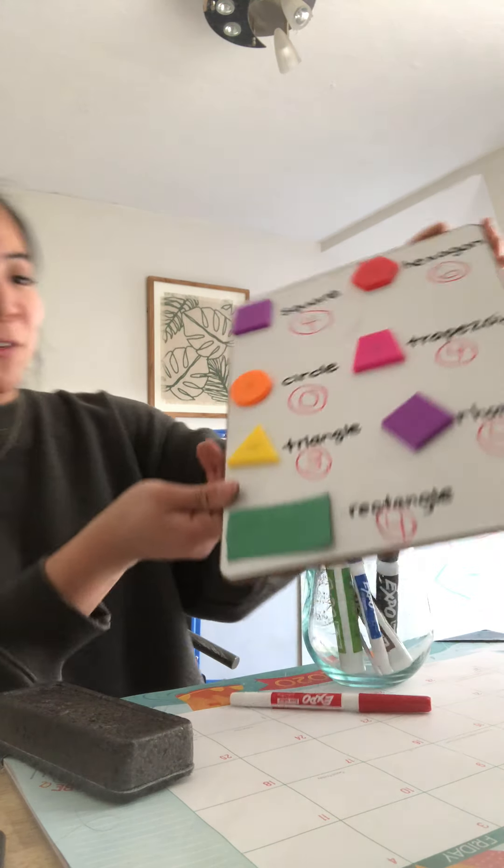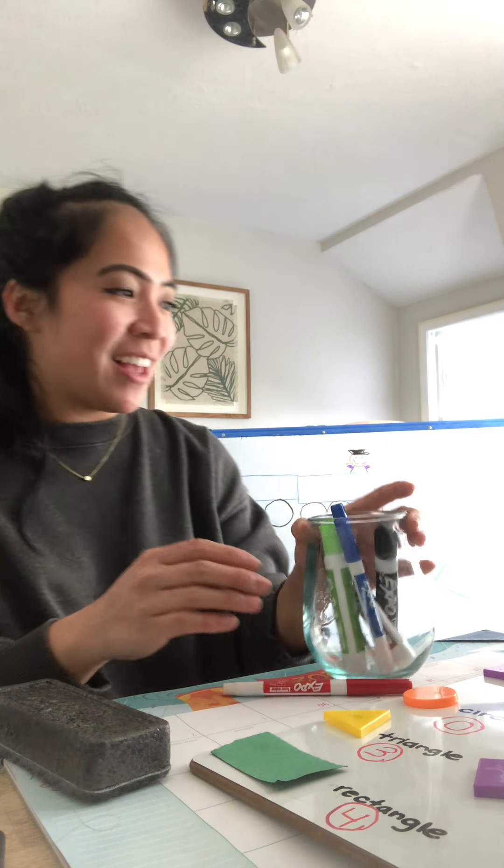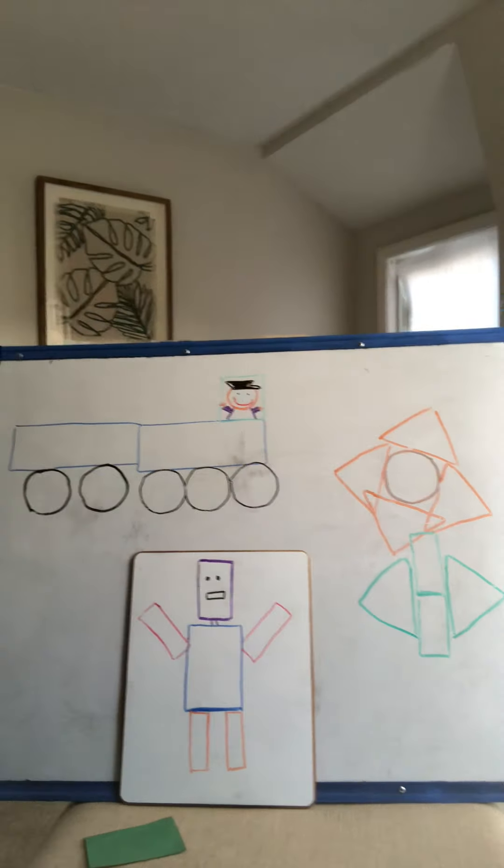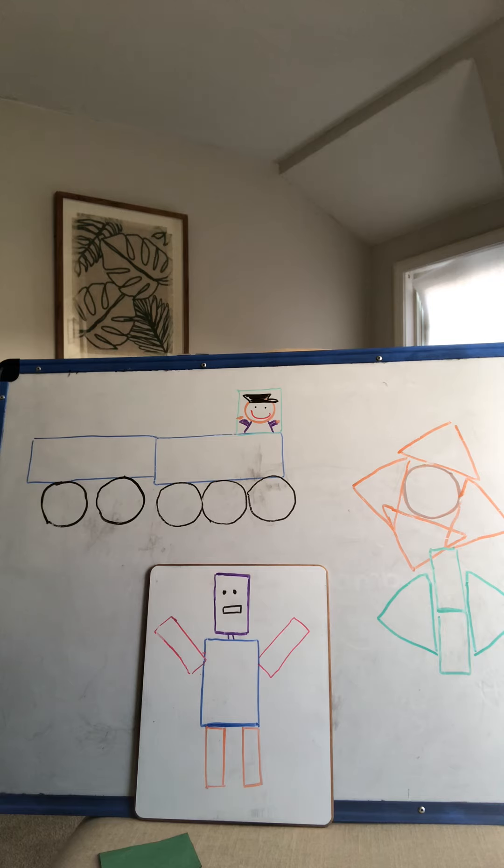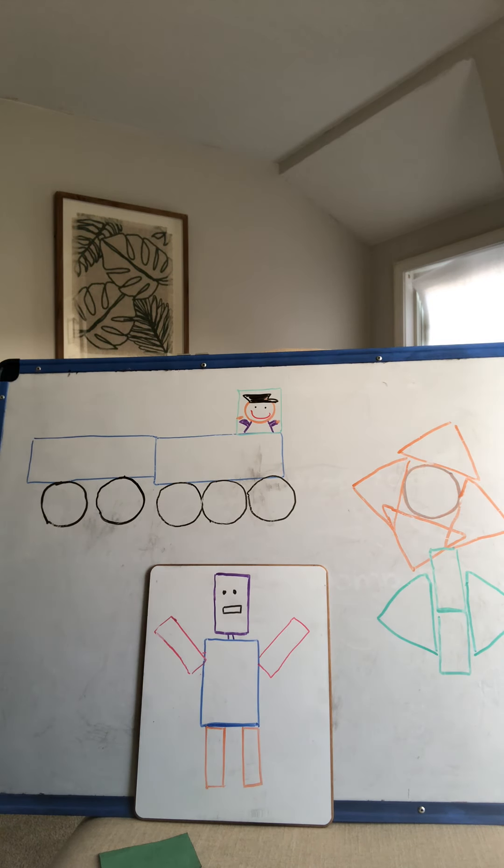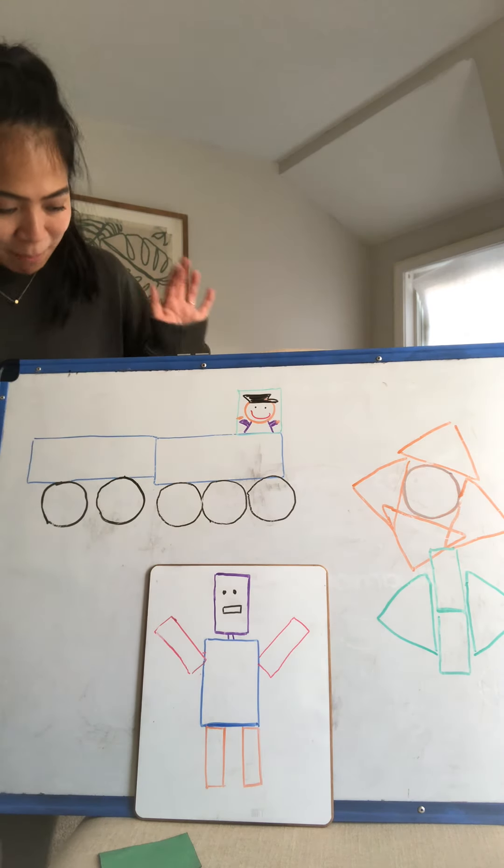Also, I would like for you guys to do is to make shape pictures using your shapes. And on the board, I have some shapes for you guys already. And I drew some up for you. As you can see, what is this? A train. That's right. And you'll see some shapes that I used to make my train.